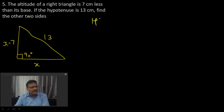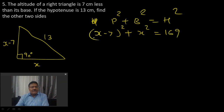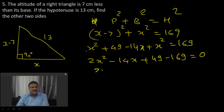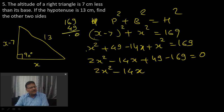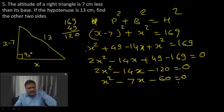Using Pythagoras theorem: perpendicular² + base² = hypotenuse². So (x − 7)² + x² = 13² = 169. Expanding: x² + 49 − 14x + x² = 169, giving 2x² − 14x + 49 − 169 = 0, so 2x² − 14x − 120 = 0. Dividing by 2: x² − 7x − 60 = 0.